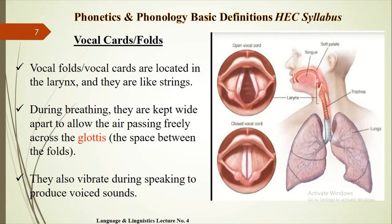Next, we have vocal cords or vocal folds. They are located in the larynx and they are like strings. During breathing, they are kept apart to allow air to pass freely across the glottis — the glottis, as you can see in the picture, is the space between the folds. They are responsible for producing vibration during speaking and for producing human speech sounds.